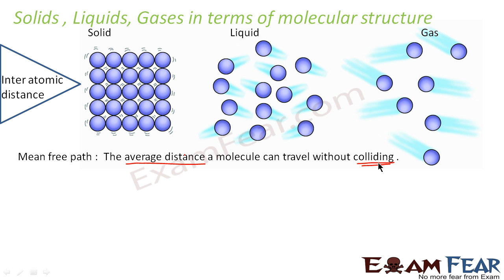The name itself defines it. Mean, that is the average. Free means the path which it covers freely without collision. Path, that is the distance. So, the average distance traveled freely without colliding. Very easy to remember.